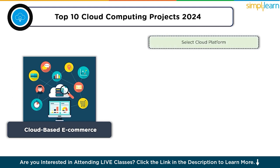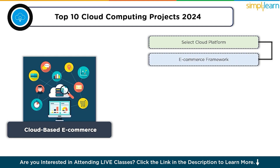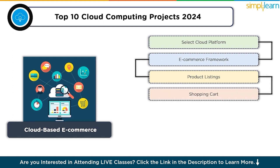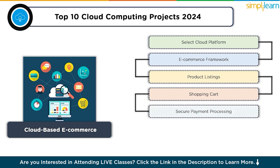Start by selecting a cloud platform like AWS or Azure. Choose an e-commerce framework such as WooCommerce or Shopify, or build a custom solution. Add product listings and descriptions with images, implement a shopping cart for users to add products, and set up secure payment processing using gateways like Stripe or PayPal.